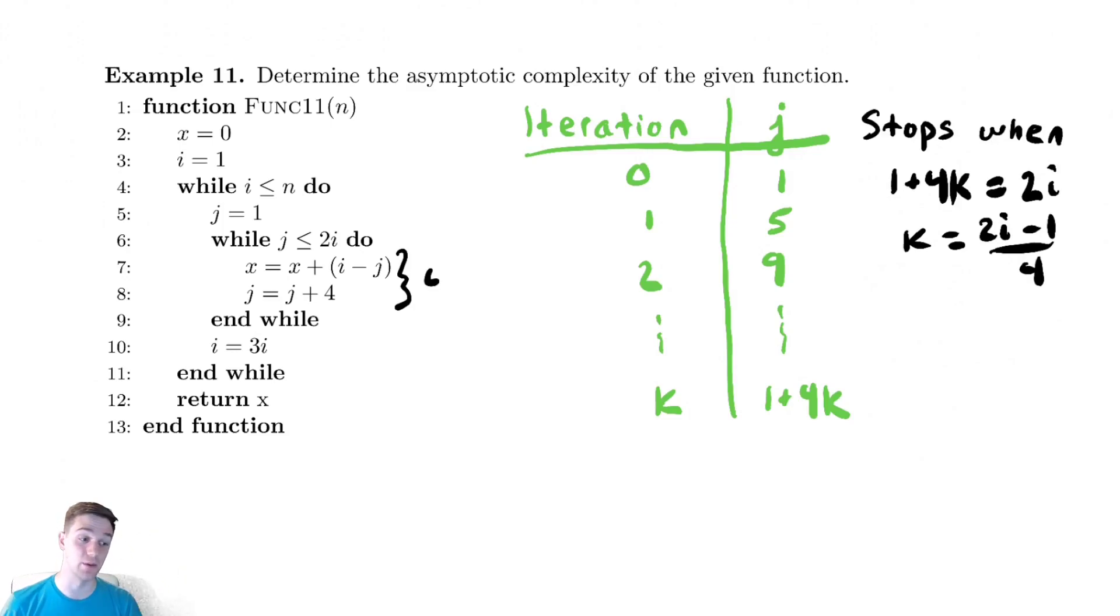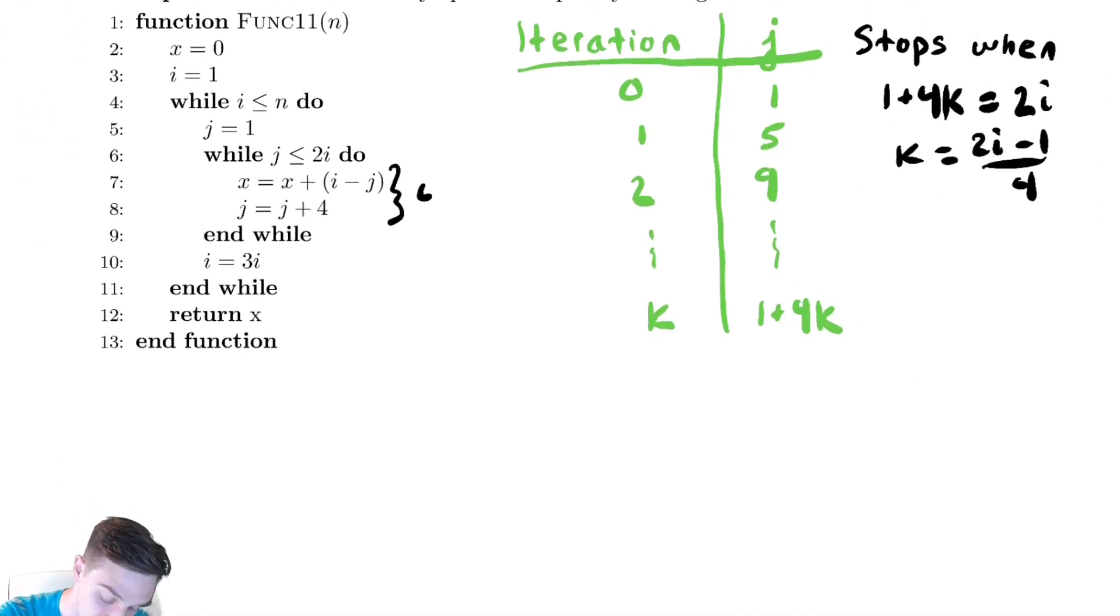I'm going to do a bit of simplification here that I will also allow you to make when you're solving problems like this, which is I'm going to say k is approximately 2i over 4, which is just i over 2. Ignoring that small subtraction that we have at the end there. That is a difference of at most one iteration, so it's not going to impact anything.